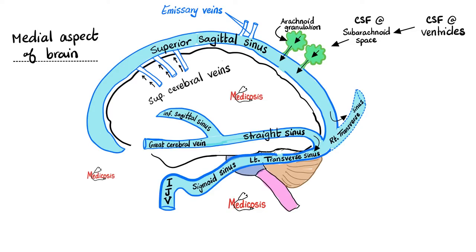Basically, the CSF is just like lymph — it came from the blood via the choroid plexus, which is a plexus of capillaries, and is returned back to the blood, in this case venous blood. The lymph works on a very similar idea: it starts from capillaries and ends up in veins. From the blood and back to the blood.